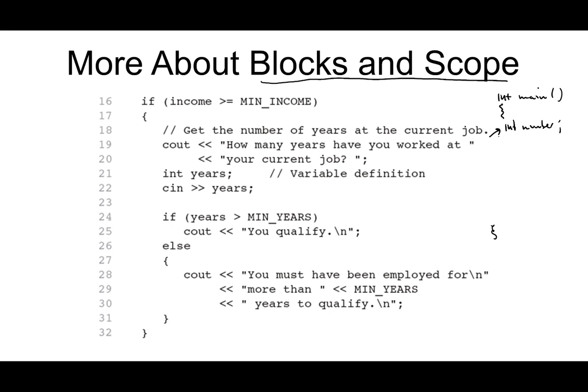This variable int number is available to use in the scope or the block of the main function. Later on, when we start writing our own functions, if we have some functions up here, then the scope of this variable is in the main function and not in those other functions. Also, a variable can't be used until it's defined. So let's say that we have some code up here — a cout statement and maybe a calculation where number equals something.